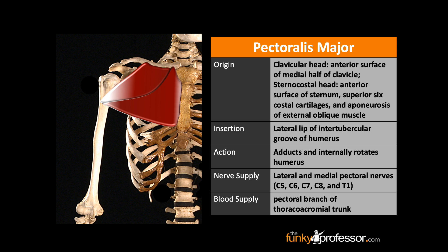The blood supply to the pectoralis major is from the pectoral branch of the thoracoacromial trunk.